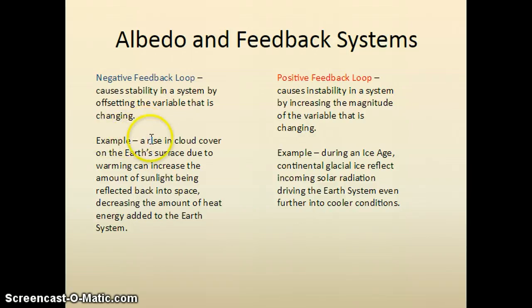So an example of a negative feedback: a rise in cloud cover on the Earth's surface due to warming can cause an increase in the amount of sunlight being reflected back into space, which decreases the amount of heat energy added to the Earth's system. In other words, it's like a checks and balances here. Increasing clouds from a warming planet decreases the net solar input of heat that the Earth experiences. So it's a checkpoint. It's a balance point that a negative feedback stabilizes the net system.